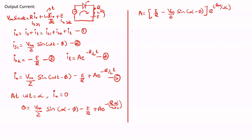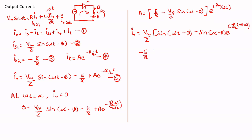Substituting A back into the expression, the final expression for Iout is: Iout = (Vm/Z)·[sin(ωt − φ) − sin(α − φ)·e^(−R(ωt−α)/ωL)] − (E/R)·[1 − e^(−R(ωt−α)/ωL)]. This is the final expression for the output current.